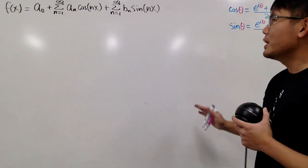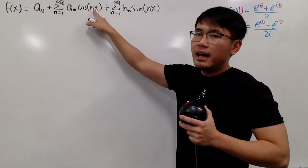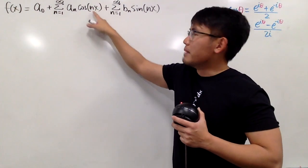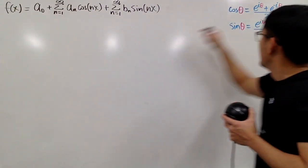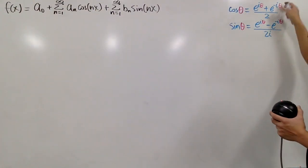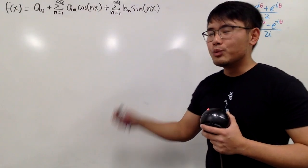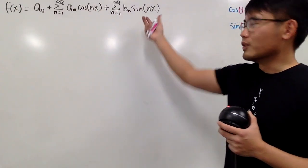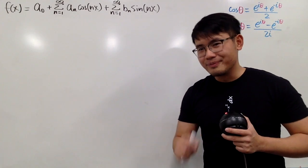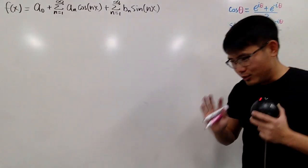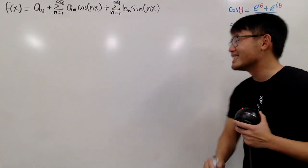So what we are going to do is we will take cosine of nx — this is my theta — and replace it with the complex form. And we will do the simplest thing for sine, and then we'll continue from there. In the end, it's going to be really beautiful.